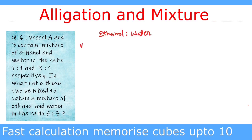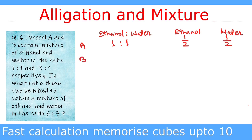In vessel A, the ratio of ethanol and water is 1:1, which means ethanol is 1 part out of 2 parts, and water is also 1 part out of 2 parts, since 1 + 1 = 2. In vessel B, the ratio of ethanol and water is 3:1, so ethanol is 3 parts out of 4 parts, since 3 + 1 = 4, and water is 1 part out of 4 parts.